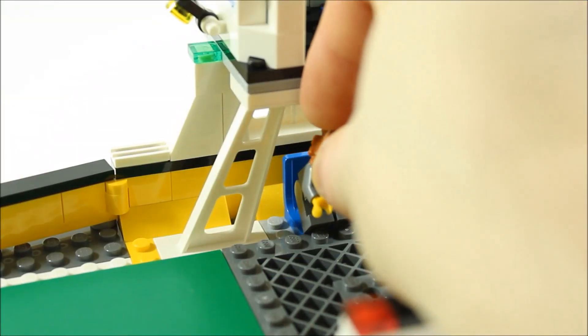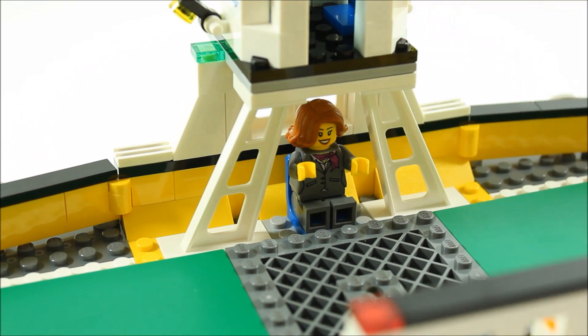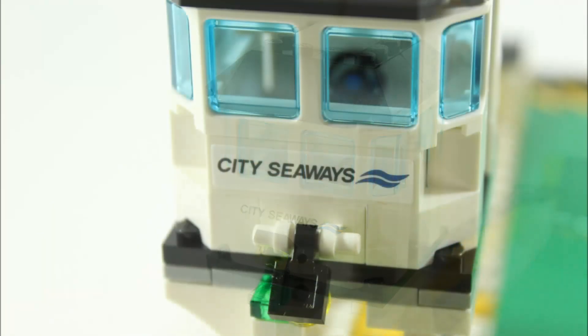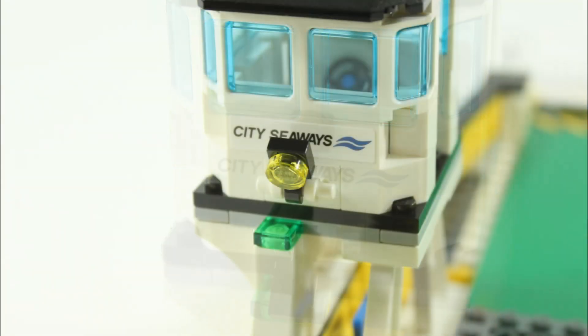Underneath the cabin is a seat where you could clip in a passenger, and opposite is a window barrier build. The cabin has City Seaway stickers on either side along with the clipped-on lights. It has these really nice clear light blue window pieces all around.